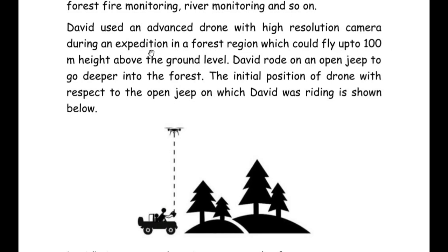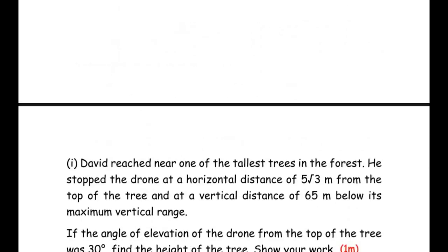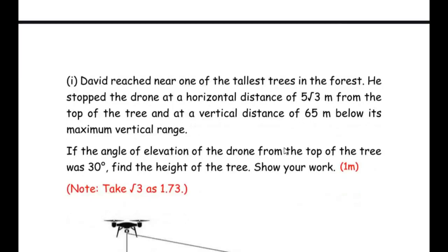David used an advanced drone with a high resolution camera during an expedition in a forest region, which could fly up to 100 meters height above the ground level. David rode on an open jeep to go deeper into the forest. The initial position of the drone with respect to the open jeep is shown. David's jeep started moving to enter the forest at an average speed of 10 meters per second, and he simultaneously started flying the drone in the same direction as the jeep.